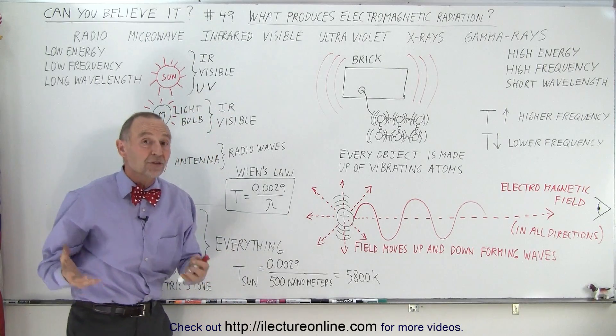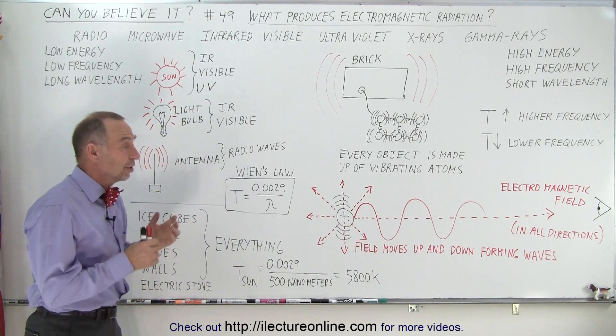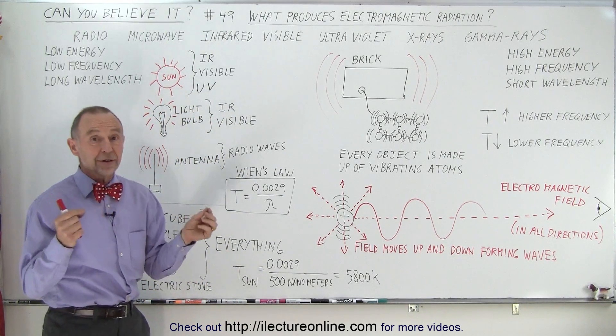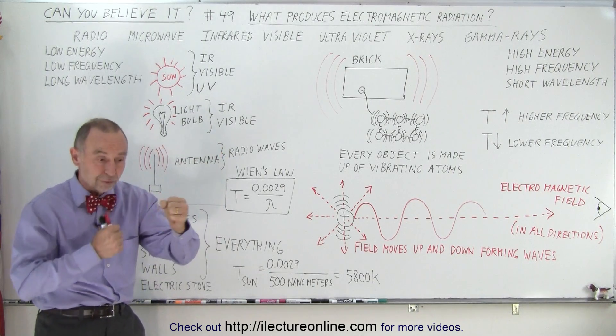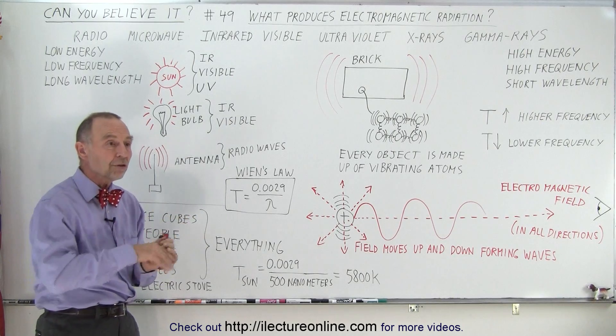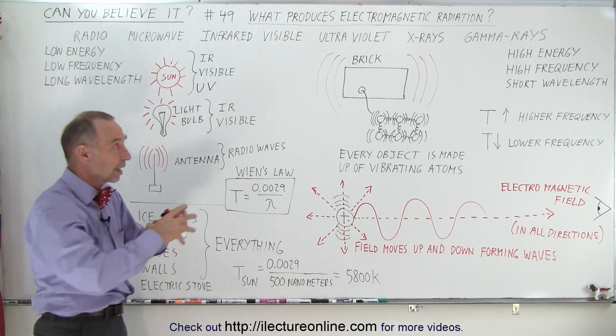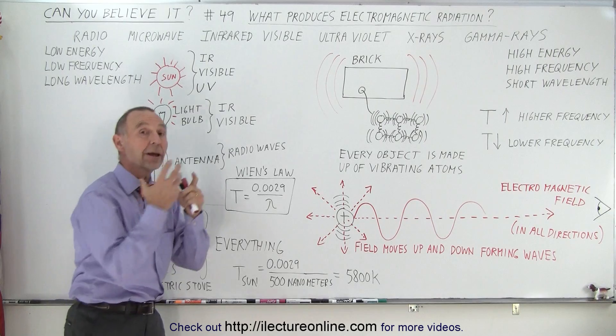And depending upon the temperature of the object, the vibration of the atoms will vary. At high temperatures, the atoms will vibrate fast. At low temperatures, the atoms will vibrate very slowly. So the frequency of the radiation coming out of an object depends upon its temperature.